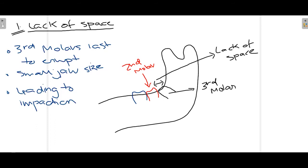This can also happen in the maxilla with the same phenomenon. In most cases, lack of space is due to a small jaw size — the jaw is simply not large enough to accommodate the third molar, and this finally leads to impaction.